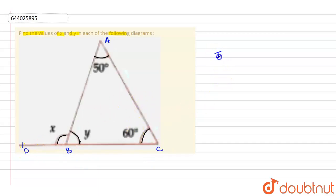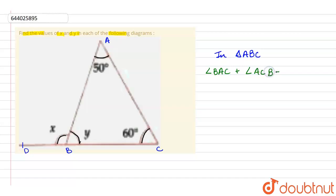So in triangle ABC, we know that the sum of all the angles of a triangle is 180 degrees. That is, angle BAC plus angle ACB plus angle CBA will be equal to 180 degrees. That means angle BAC, which is 50 degrees, plus angle ACB, which is 60 degrees, plus angle CBA, which is Y degrees, equals 180 degrees.